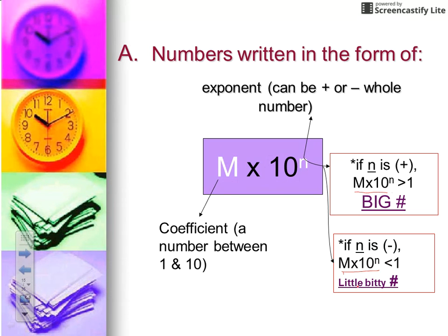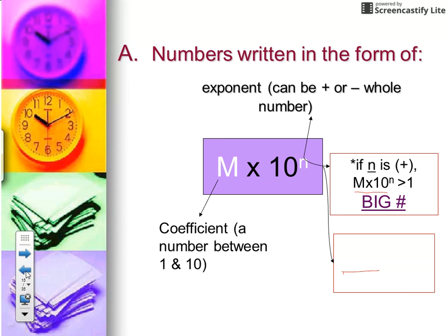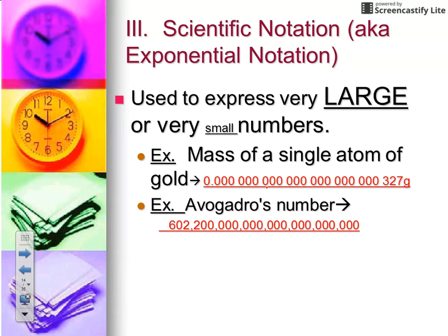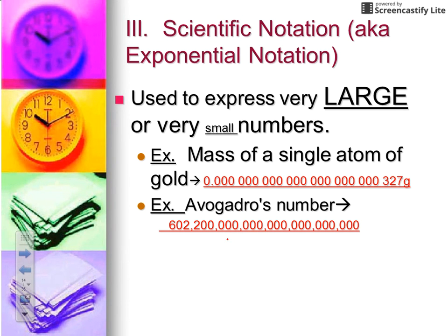Going back to our previous examples: the mass of a single atom of gold is one of those little bitty numbers. So when we write it in scientific notation, what kind of exponent will it have? That's right — since it's a tiny number it's going to have a negative exponent. Avogadro's number is one of those great big numbers, so its exponent will be positive.